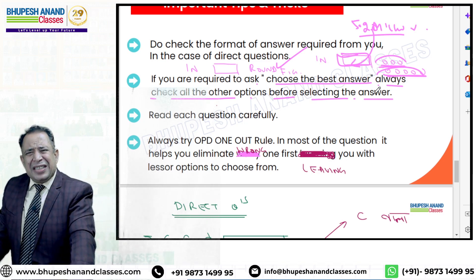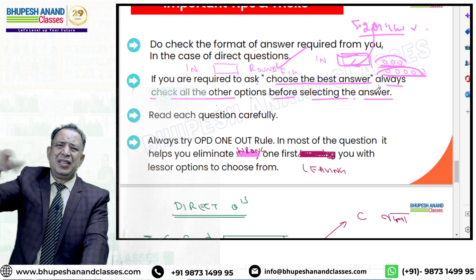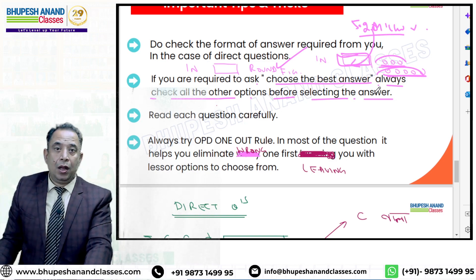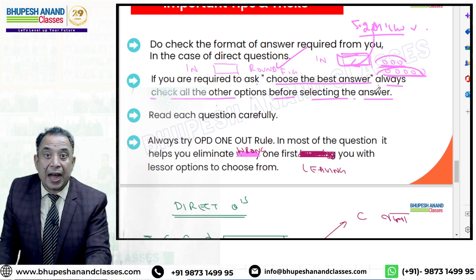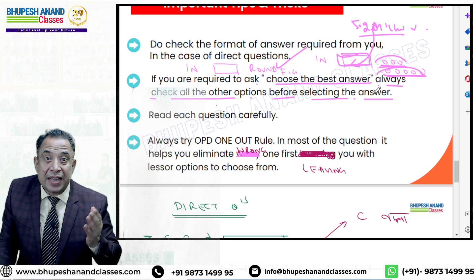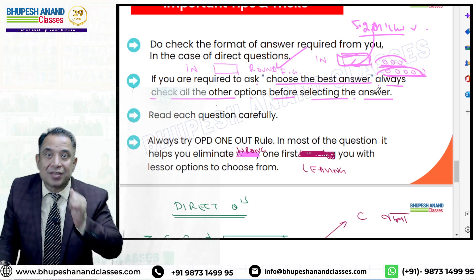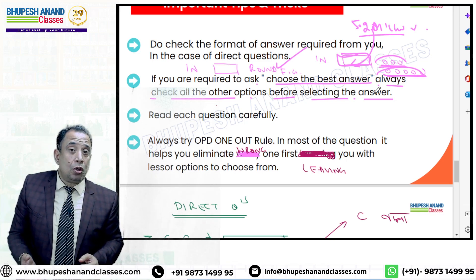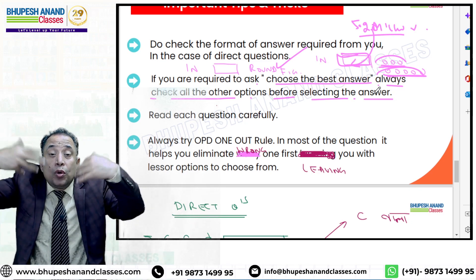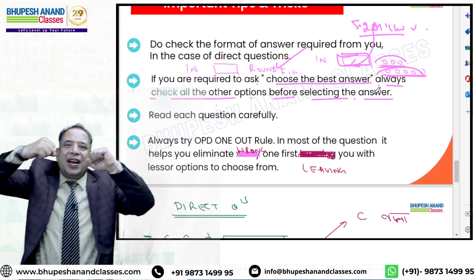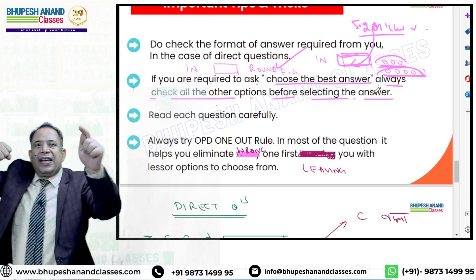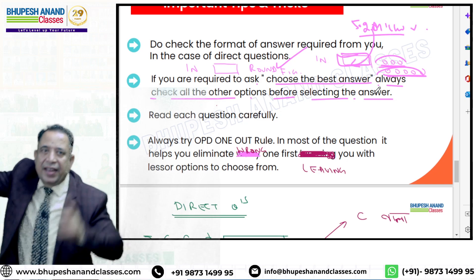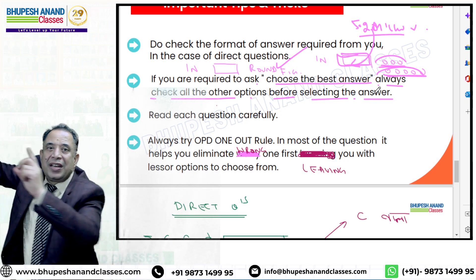हम कई बार जल्दी कर देते हैं - 'choose the best answer' लिखा होता है पर हम पहला ही option ठीक मान लेते हैं। ऐसा नहीं होता - कई बार second option पहले से ज्यादा best होती है। ACC के examiners बड़े चालाक हैं, so you have to read all the options then only you can select the best। जैसे restaurant में पहले सारा menu देखते हैं फिर best dish select करते हैं।